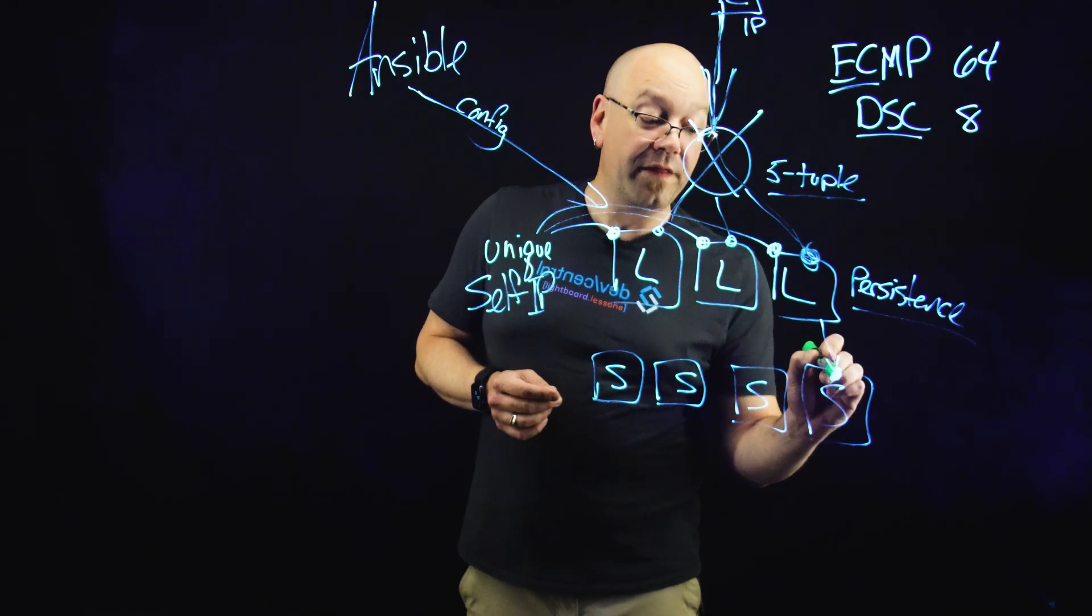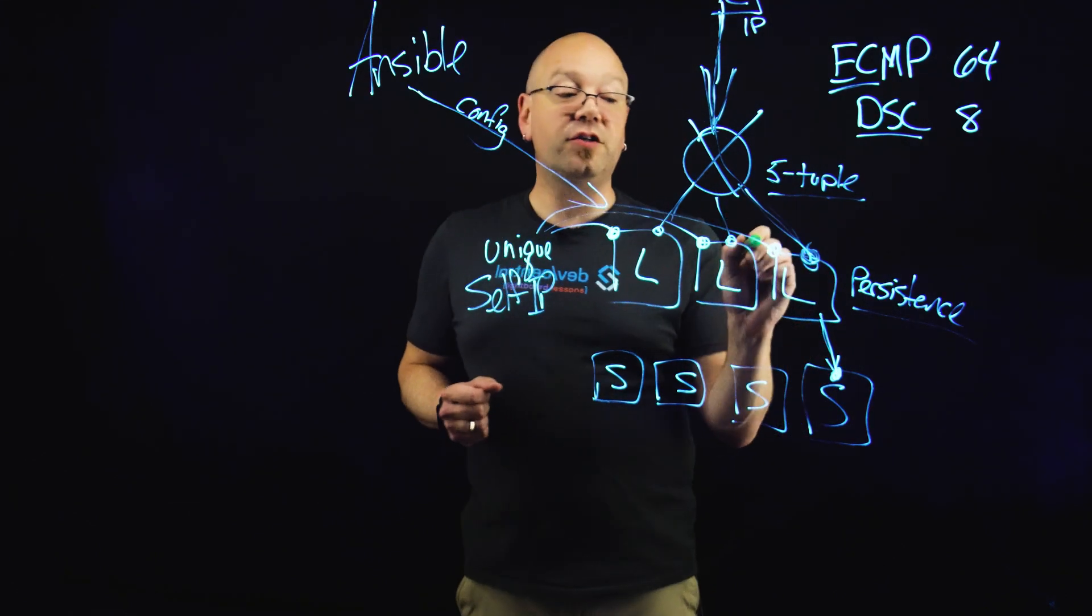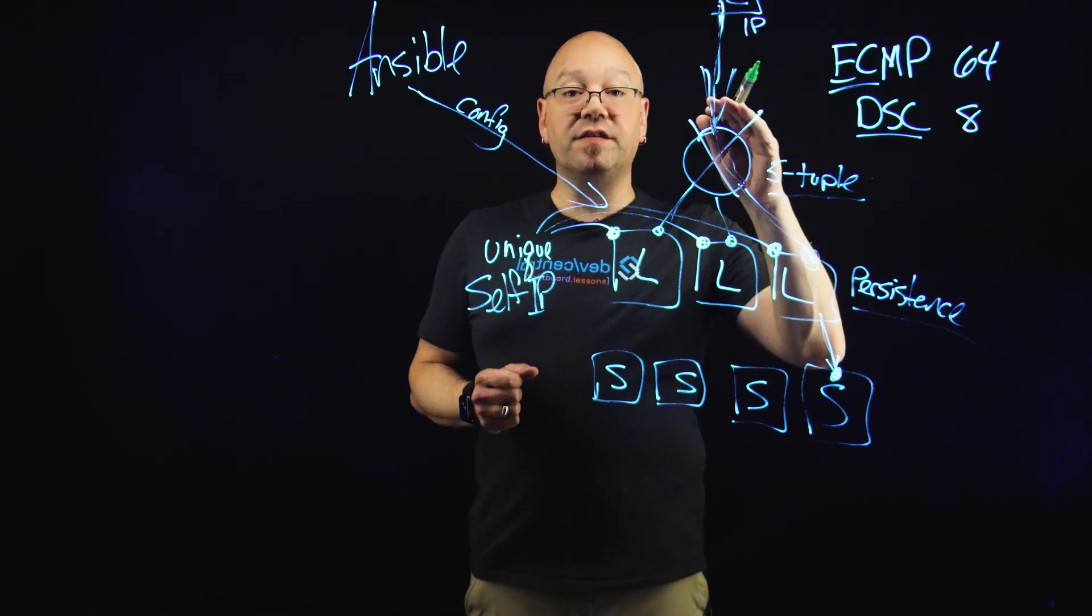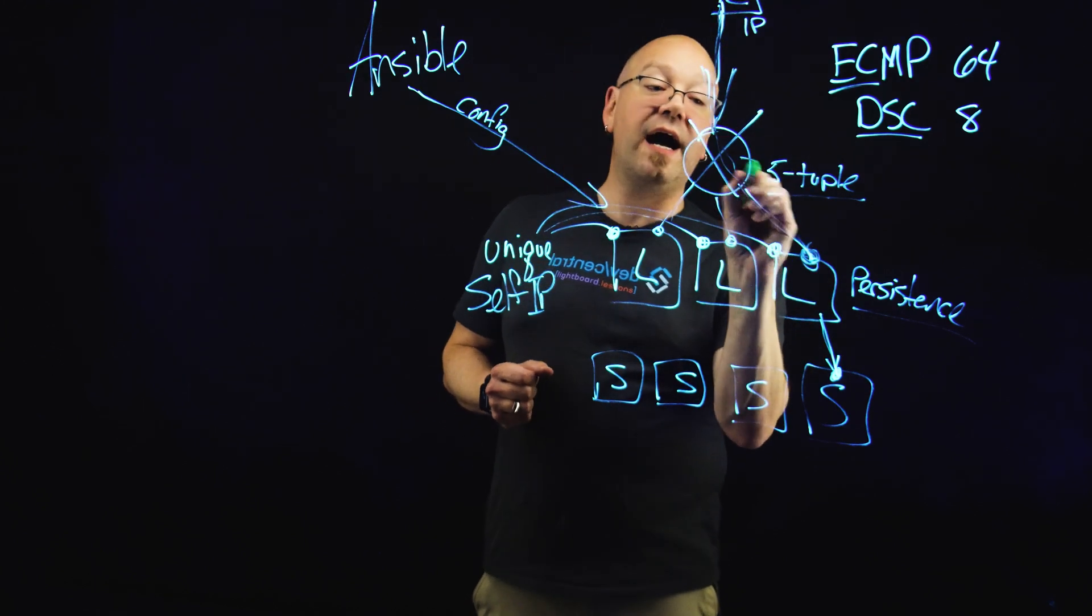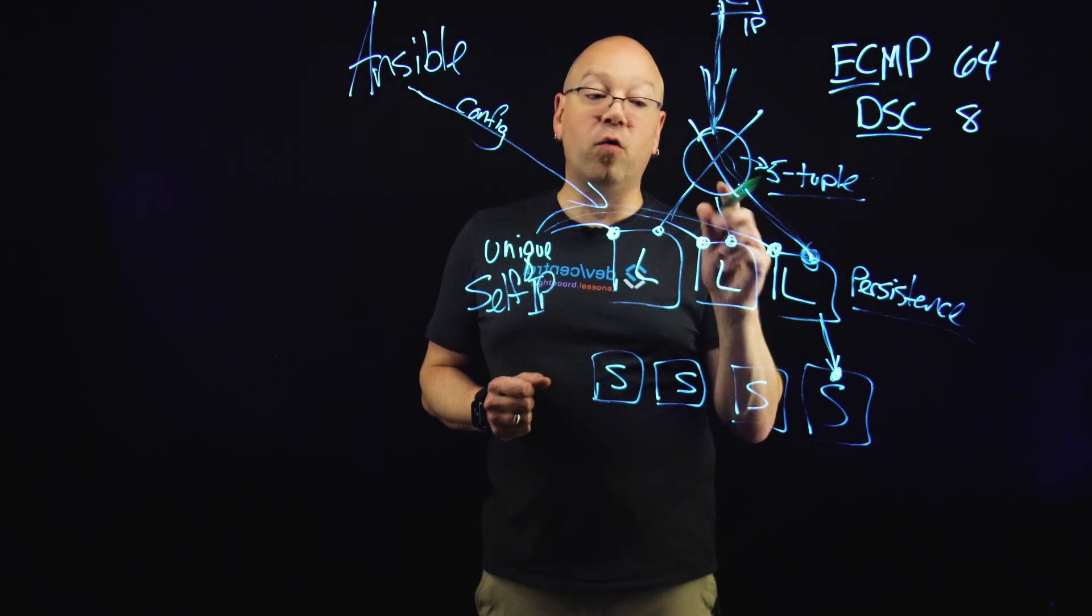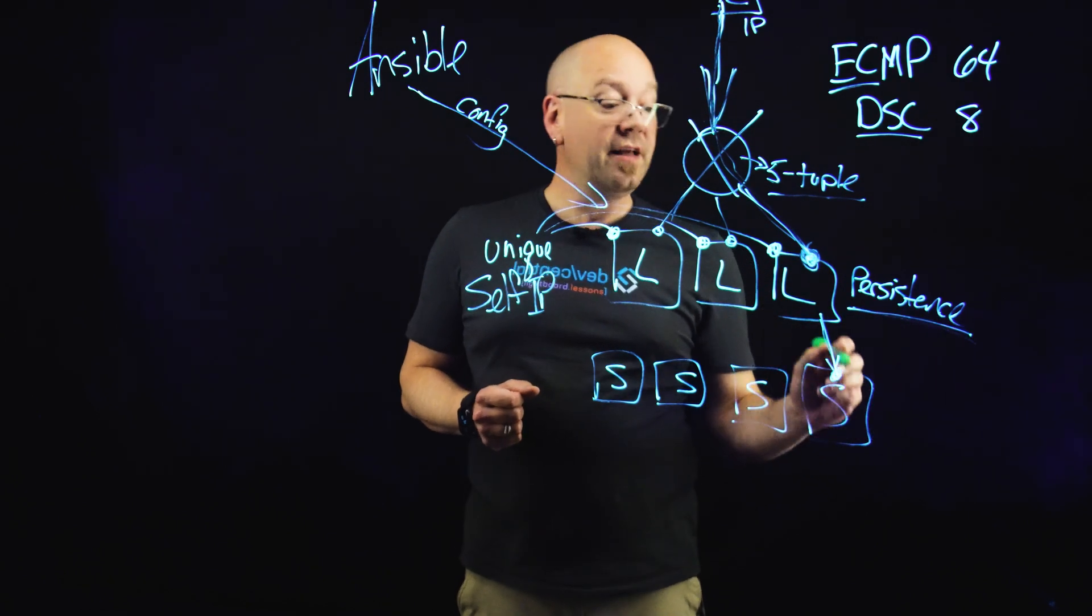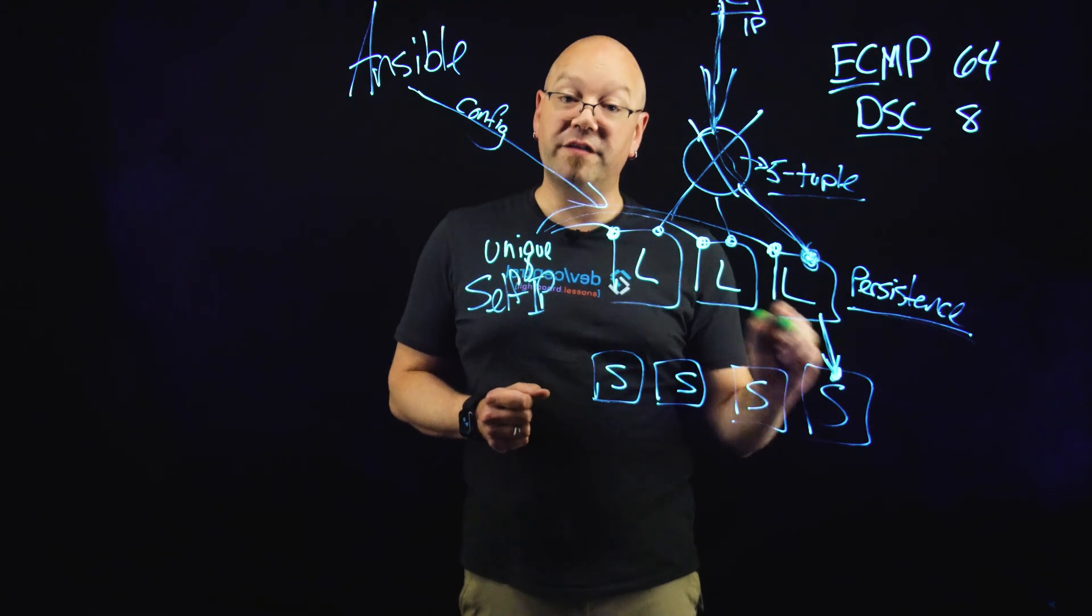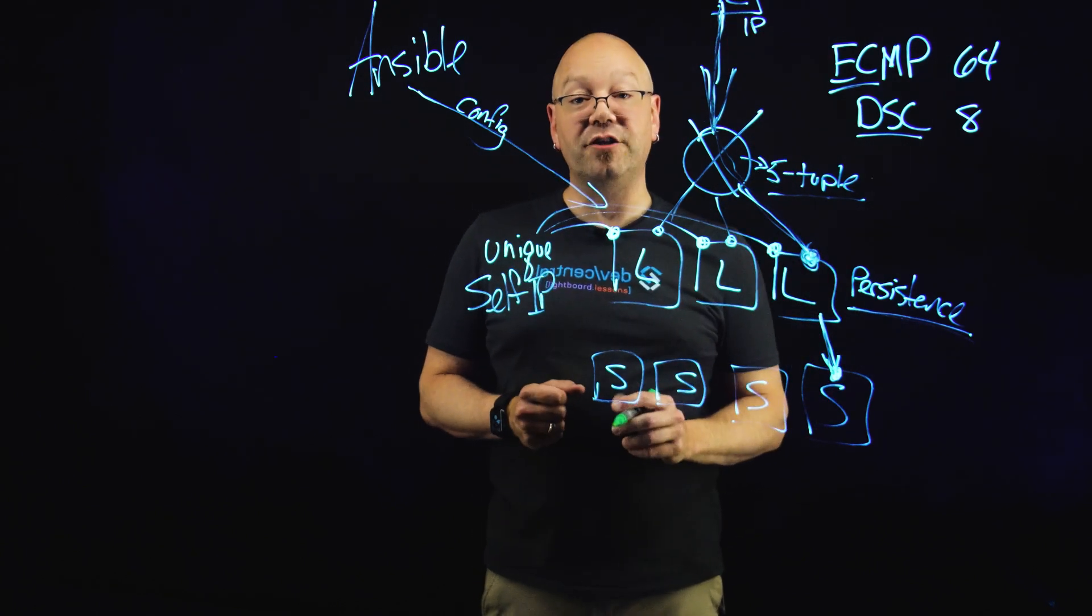And when the packet is returned to the LTM via auto last hop and then back to the router and thus to the client, then the SYNAC, if this is a TCP application, comes back from the client, hits the router and the router says, I have an entry in my five tuple hash for this flow and I'm going to send it back to the same LTM who has a persistence profile understanding that this packet and this flow are being handled by this particular server. This server can then act and complete the TCP handshake.